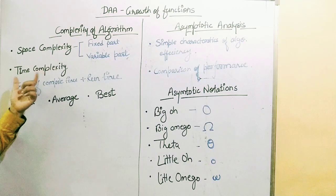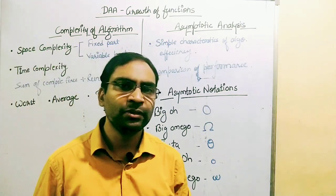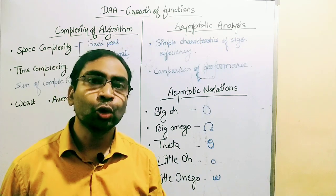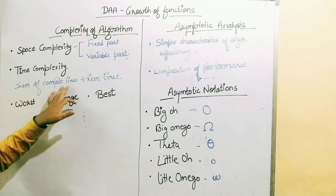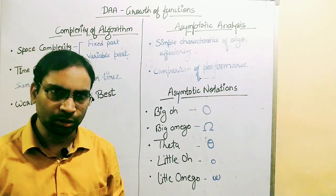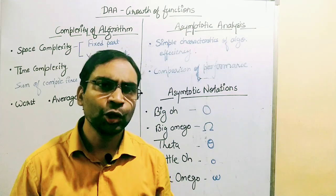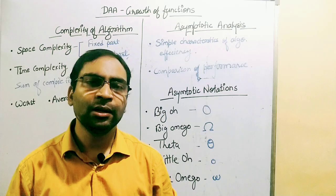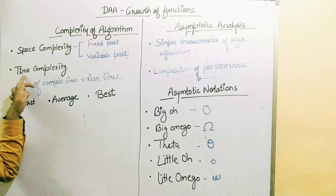Time complexity gives us the idea of how much time the algorithm will take to execute with smaller input as well as with the growth of input size. Time complexity is basically the sum of compile time plus run time of the algorithm. It tells us in how much time the algorithm will complete its execution — this is another way of measuring algorithm performance. We measure algorithm performance in terms of both space and time.